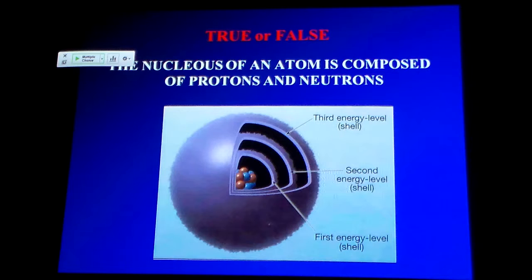I'm going to draw on your knowledge of physics and chemistry here for a moment. True or false: A nucleus of an atom is composed of protons and neutrons. 20 seconds.